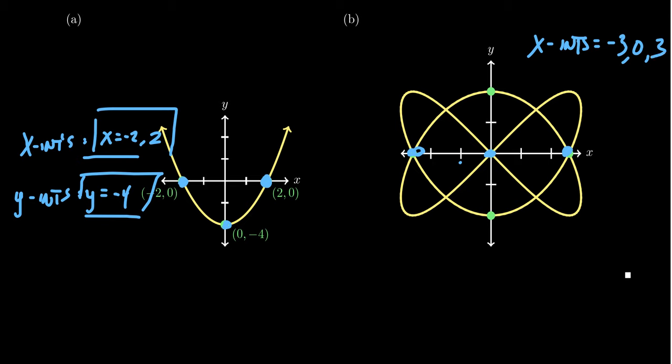The y-intercepts we find similarly. Looking here, we get a y-intercept right here. Counting down one, two - we're below the x-axis, so that's a negative value. We get negative two as a y-intercept.